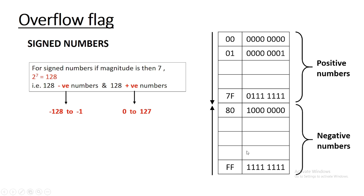For negative numbers, the range starts from 0x80 and ends with 0xFF. Here if you notice, MSB is always 1 and the rest 7 bits represent the negative number. So for negative numbers the rest 7 bits go from all 0s to all 1s. The numbers move from 0 to 127 and after 127 it directly goes to minus 128 — after 0x7F the next number is 0x80, but 0x80 represents minus 128, not minus 1.